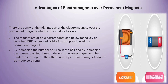Advantages of an electromagnet over a permanent magnet: The magnetism of the electromagnet can be switched on or off as required — when we need it, we switch on the circuit, and when it is not needed, we switch off. This is not possible with a permanent magnet. Also, we can increase the magnetic strength of an electromagnet by increasing the number of turns of the coil over the iron core, or by increasing the amount of current passing through the wire. A permanent magnet cannot be made stronger in this way.